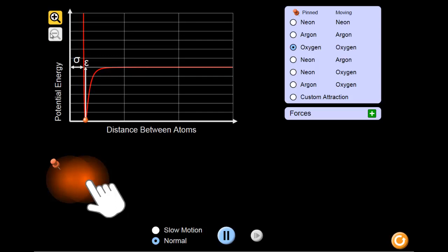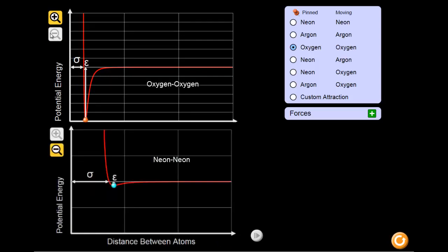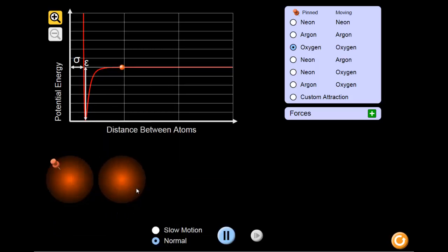What differences do you notice between the graphs of the two different atoms? As you can see, something markedly different occurs between the two oxygen atoms. Let's take a look at what's going on. If we pull the two atoms away from each other and release them, you can see that they attract together, but instead of bouncing off each other, they stay close together.